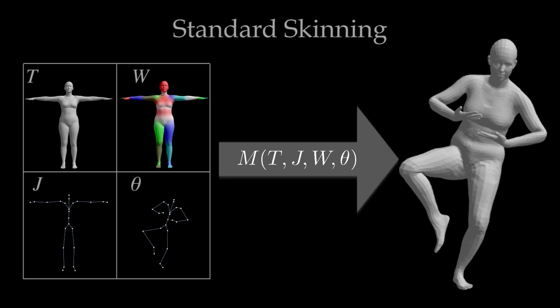SMPL is compatible because it is based on standard skinning methods. A skinned body model defines the vertices of a template T in a rest pose, joint positions J, and blend weights W. Given the pose of the skeleton, theta, skinning computes the vertex locations of the mesh using linear blending of the vertices, based on rotations of different parts.